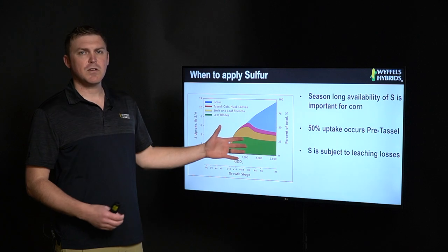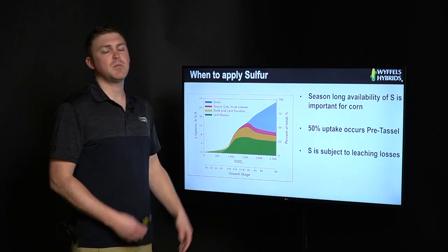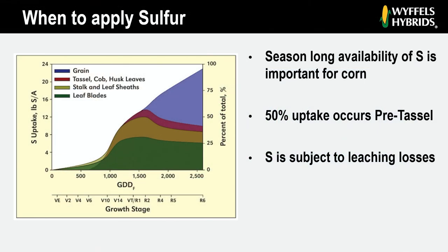Let's talk about when to apply sulfur. Looking at the sulfur uptake curve for corn, season-long availability of sulfur is absolutely critical. When we get to about pre-tassel or VT/R1, we've achieved about 50 percent of total sulfur uptake. So we still need to make sure that later in the season we have availability of sulfur for that corn crop to uptake and use into grain fill. As with nitrogen, sulfur is subject to leaching — it has a negative charge, that's how it wants to exist in the soil environment. So if we get heavy rainfall or conditions where we can leach nitrogen, we can also leach sulfur. Keep that in mind when managing sulfur on your corn acres.